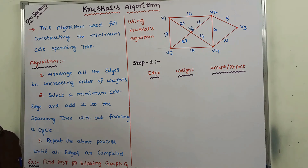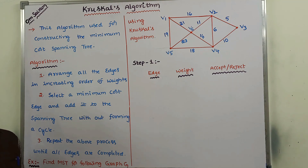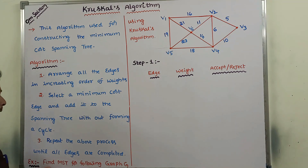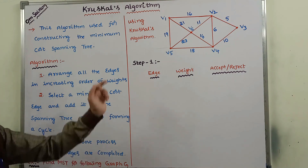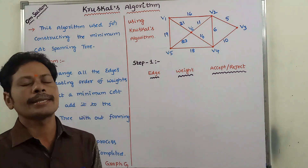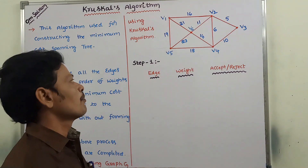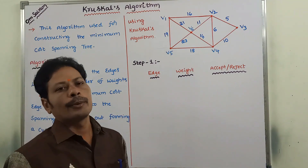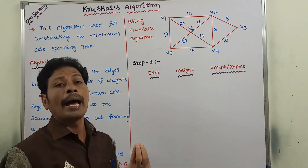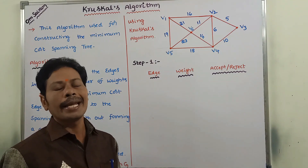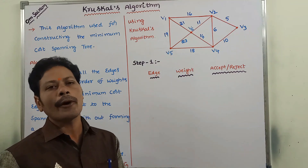Finally, m minus n plus 1 edges are removed from the graph for getting the minimum cost spanning tree, where m is the number of edges and n is the number of vertices. Now, let's go through one example: find the minimum cost spanning tree for the following graph G using Kruskal's algorithm. This is the given graph. Go to step 1 — arrange all the edges in increasing order of weight.